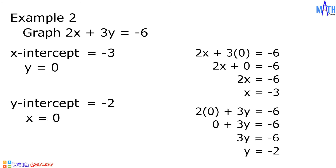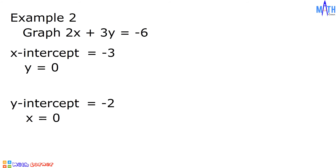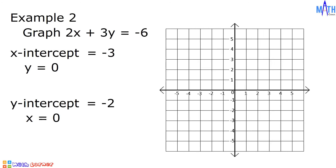After solving for the x-intercept and y-intercept, let us sketch the graph of 2x + 3y = -6. We locate -3 on the x-axis and -2 on the y-axis. Drawing a line passing through these two points, this is the graph of 2x + 3y = -6.